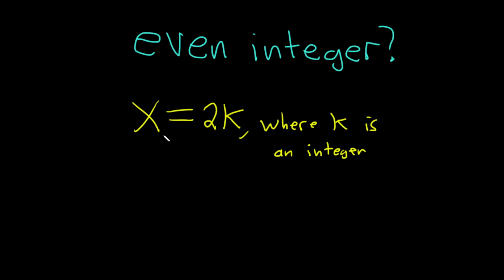So if you ever have an integer x and you can write it in this form, 2 times another integer where k is an integer, then you say you have an even integer.